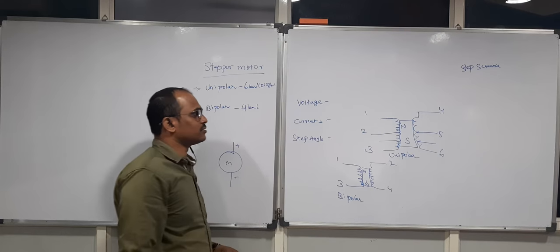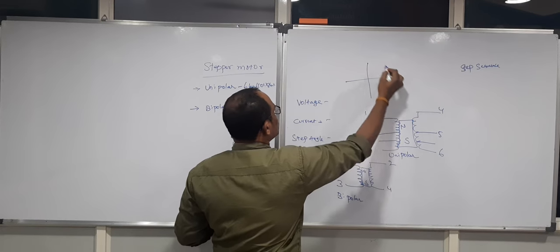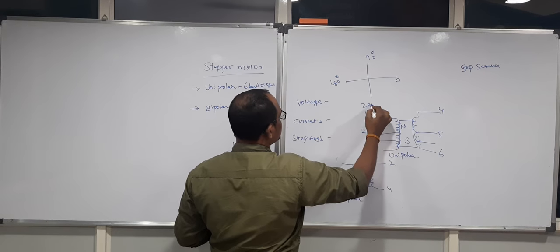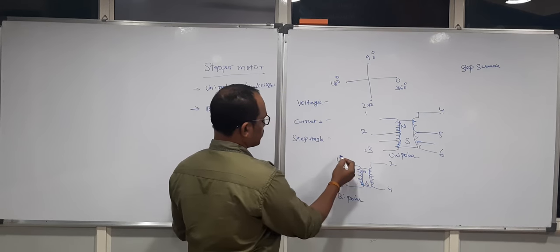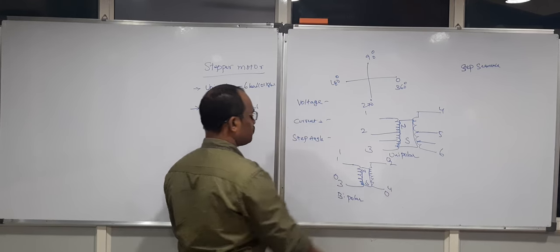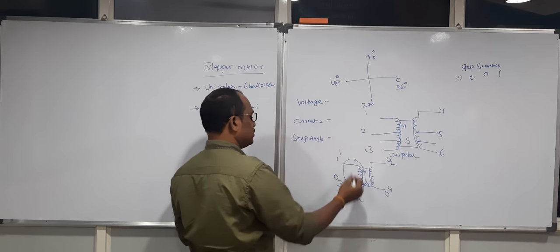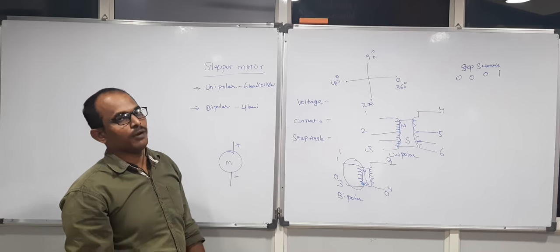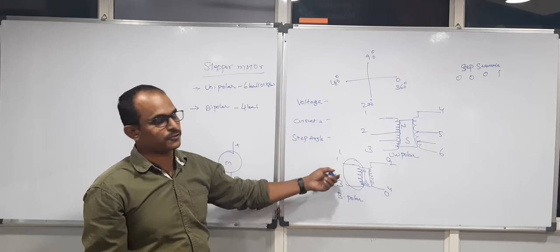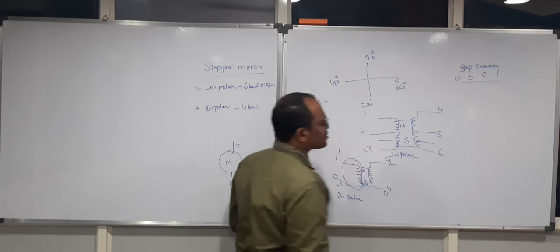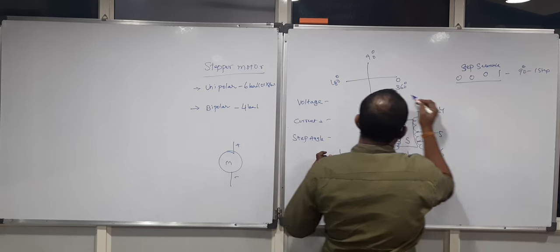Now, regarding the step sequence: what does it mean and how much angle does the stepper motor make? For a full 360-degree rotation there are positions at 0, 90, 180, 270, and 360 degrees. For a bipolar stepper motor, the first step logic is 1, 0, 0, 0 — energizing only one coil. The resulting magnetic force acts on the permanent magnet through attraction or repulsion. Holding this logic causes the motor to take one step, which moves it 90 degrees from 0 to 90.